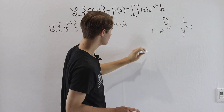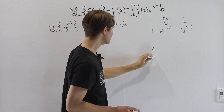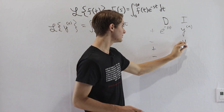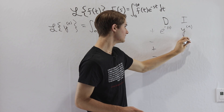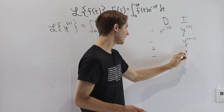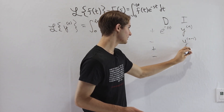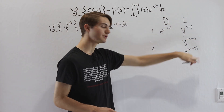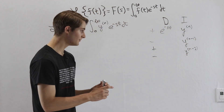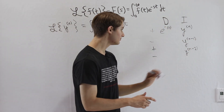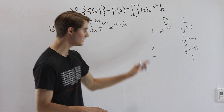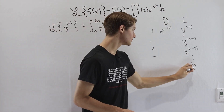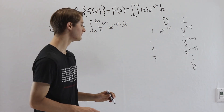Going down the DI table with alternating plus and minus signs: every time we integrate the nth derivative of y, we'll have one less order derivative. So we get y^(n), y^(n−1), y^(n−2), and if we continue this process all the way down to 0, eventually we'll just get y at the bottom.